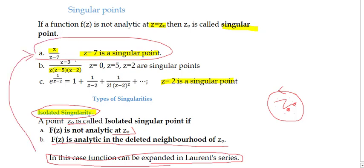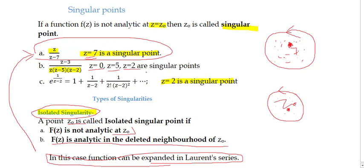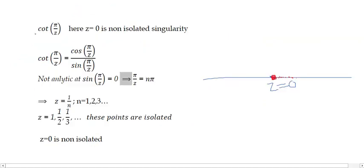For example, z/(z minus 7): z equal to 7 is an isolated singularity because we can find a neighborhood in which the function is analytic except at z equal to 7. Similarly, z equal to 0, z equal to 5, and z equal to 2 are isolated for the second example, and z equal to 2 is isolated for the exponential example. All are examples of isolated singularity.